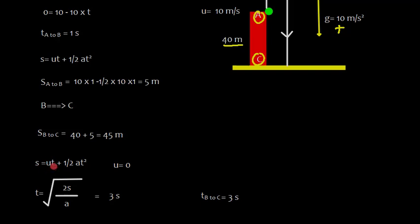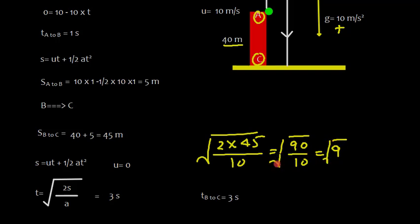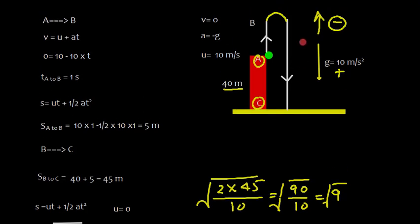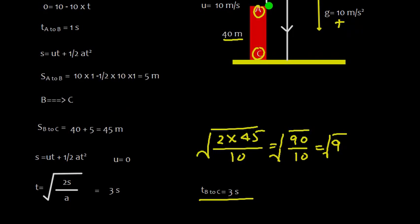Since u = 0, t = √(2s/a). So t = √(2×45/10) = √(90/10) = √9 = 3 seconds. Time taken from B to C is 3 seconds.